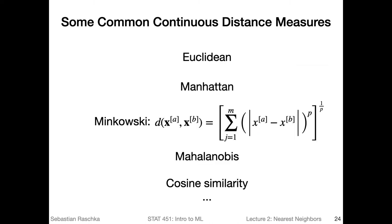Here is a list of the most common continuous distance measures — continuous in terms of the features we work with. One common distance measure is the Euclidean distance, which you're probably already familiar with. The Manhattan distance is very similar but uses the absolute difference between two values rather than the squared distance used in the Euclidean distance measure.